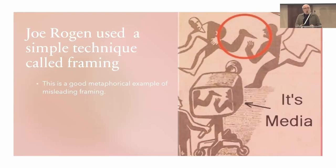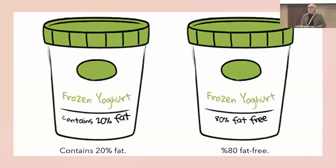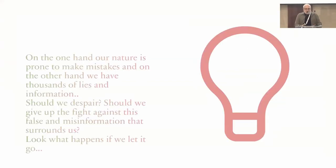Framing the data is a technique used all the time in media and now in social media. For example: 'contains 20% fat' or '80% fat free' — both are true, but they frame the same information differently. On one hand, our nature is prone to make mistakes; on the other hand, we have thousands of lies and misleading information.